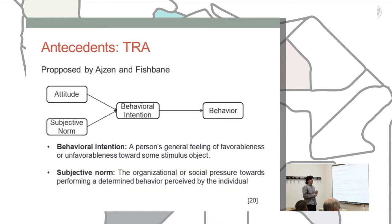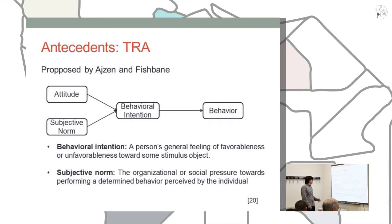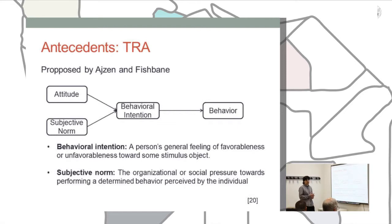The TAM model is based on the Theory of Reasoned Action and the Theory of Planned Behavior. The Theory of Reasoned Action tries to explain the problem of what leads a person to perform a given behavior. It starts with two concepts: the attitude, which is composed by the beliefs of the individual, and the subjective norm, defined as the perception of social pressure toward performing a determined behavior as perceived by the individual. These two concepts condition the behavioral intention, defined as a person's general feeling of favorableness or unfavorableness towards some stimulus.